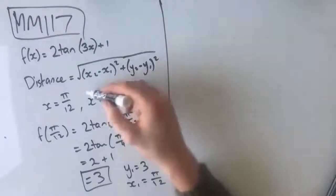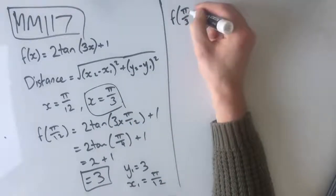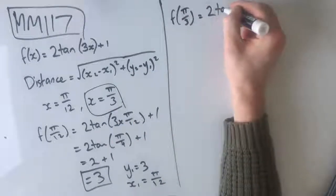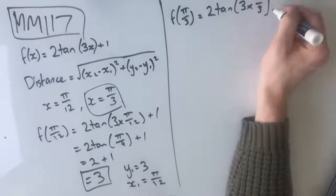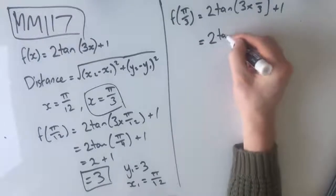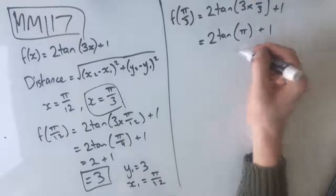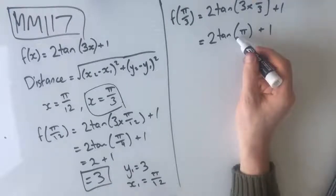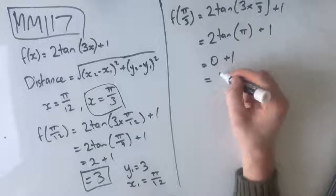Secondly, we need to find out our y value at x equals π/3. So we have f of π/3 equals 2 tan of 3 times π/3 plus 1, which gives us 2 tan of π plus 1, which is 0, which means that we get 0 plus 1, which equals 1.